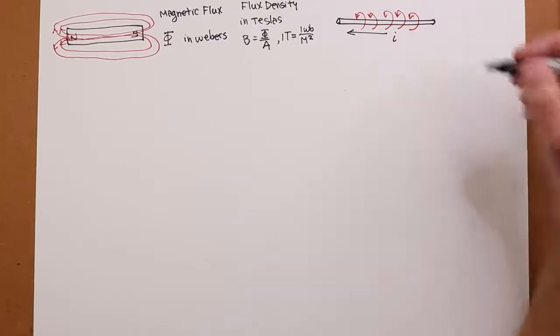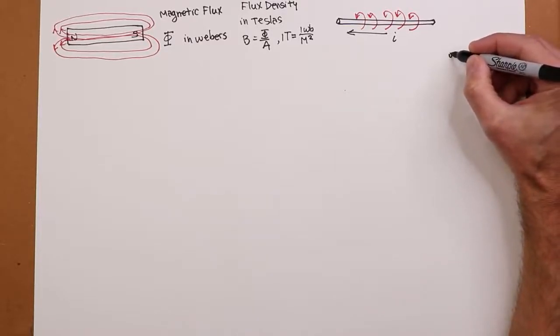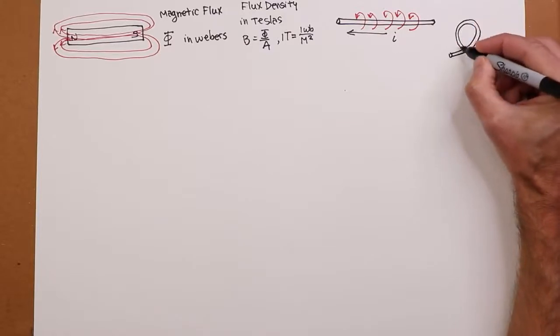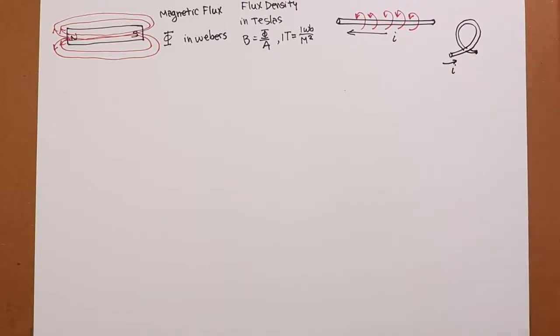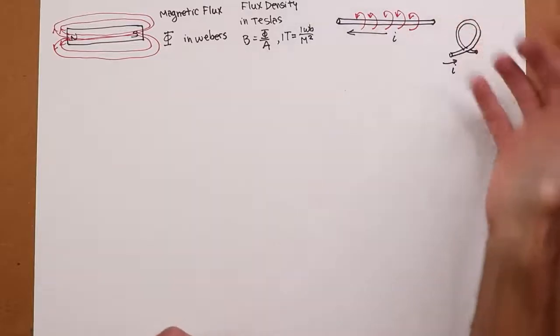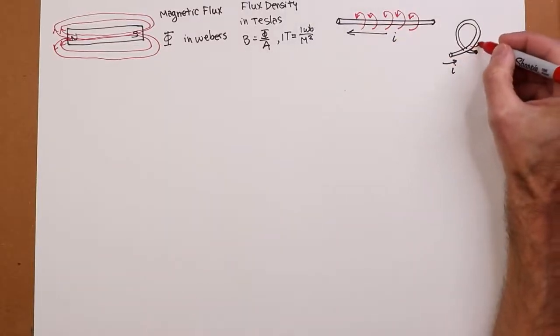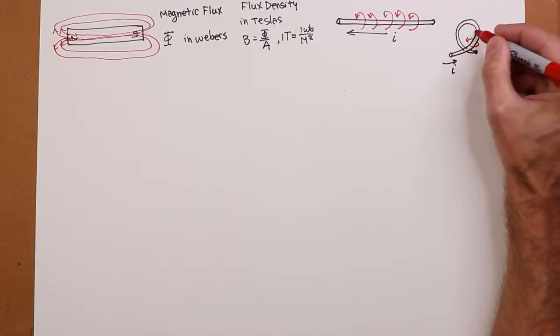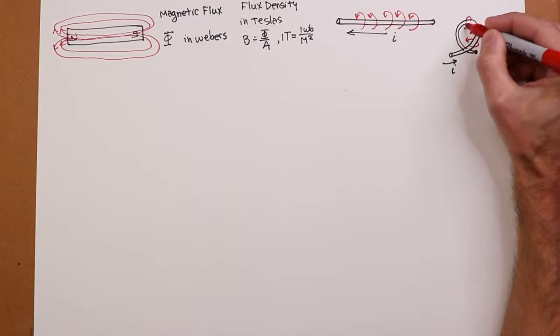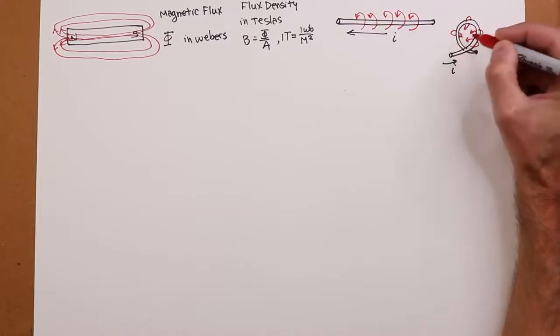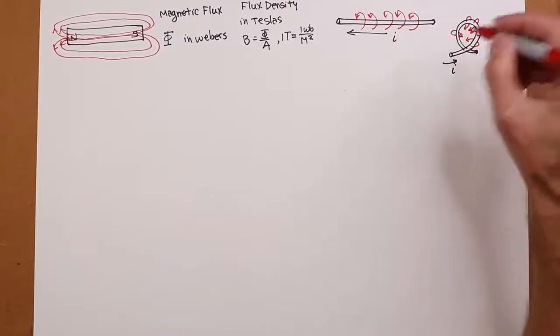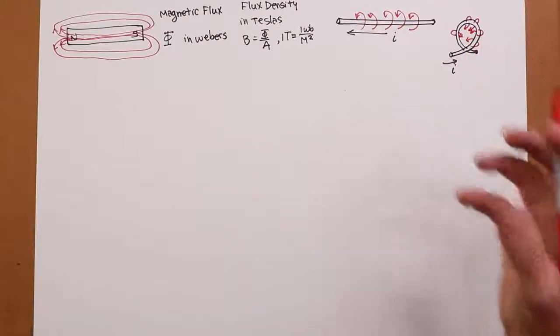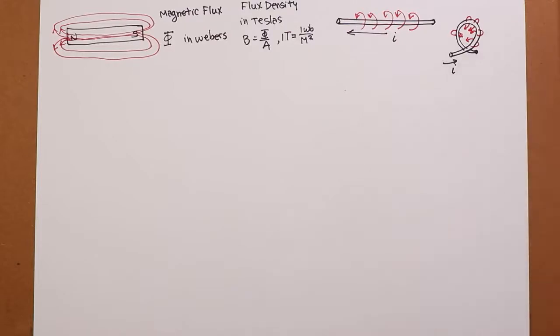Now we can concentrate that. We can sort of crank it up by creating a loop. So imagine the currents coming in like this. Now using the right-hand rule, right, you can see what's happening here. These little currents, these little flux lines are kind of coming around like this. So they're basically concentrating inside, right? So you can increase the flux density by doing this. As a matter of fact, if we have many coils, we can increase this even further.